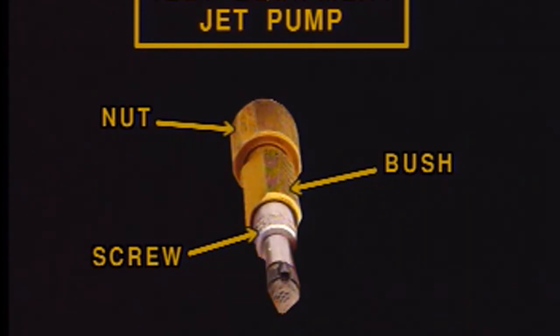On the test equipment jet pump, the nut, the screw and the plunger assembly are fully retracted.